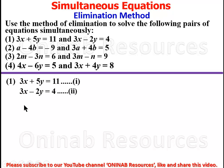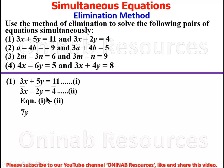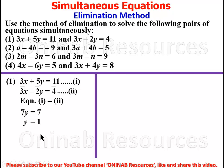The coefficients of x in the two equations are equal. Since both are positive 3, we are going to do equation 1 minus equation 2. So 3x minus 3x gives 0. Then 5y minus negative 2y — negative negative gives positive — so that gives us 5y plus 2y, which is 7y. And 11 minus 4 gives 7, so 7y equals 7.